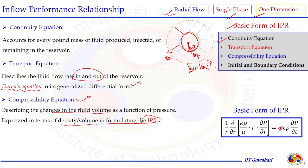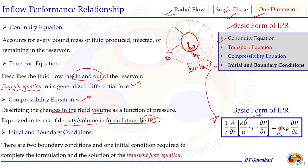That compressibility equation describes the changes in fluid volume as a function of pressure, expressed in terms of either density or volume. Once we get the basic IPR equation for a radial flow system, this is the fundamental equation — not for a particular type of fluid or particular flow regime. It can be solved for any case. Certain assumptions are taken: porosity is constant, height or pay zone thickness is constant, but the equation still includes rho — the property of the fluid — so it is applicable for oil, gas, and water.